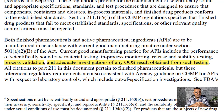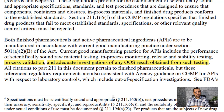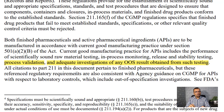I am talking about process validation. There is no mention of variable parameters — whether results must be investigated by the OOS process or by another means — in the US FDA guidance document. I found one relevant reference in the FDA guidance, highlighted on screen: current good manufacturing practice for APIs includes performance of scientifically sound raw material testing, in-process monitoring, release and stability testing, process validation, and adequate investigations of any OOS result obtained from such testing. So, any OOS result obtained during a process validation study needs to be investigated.